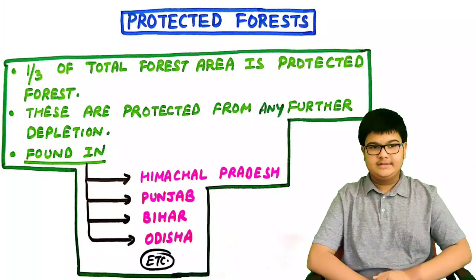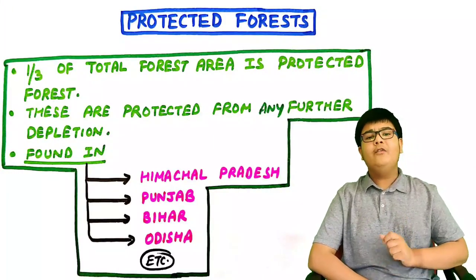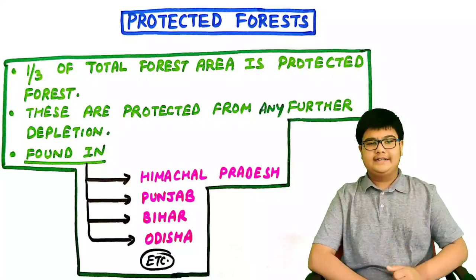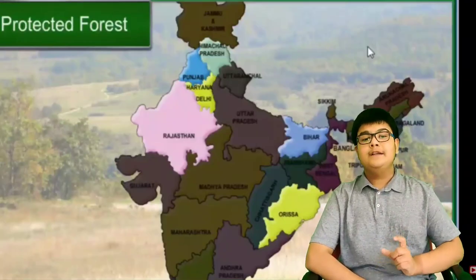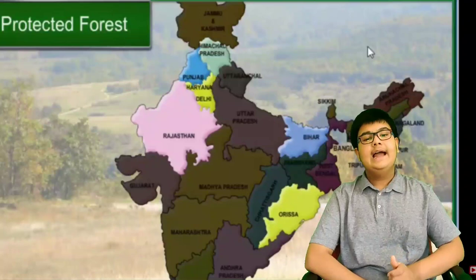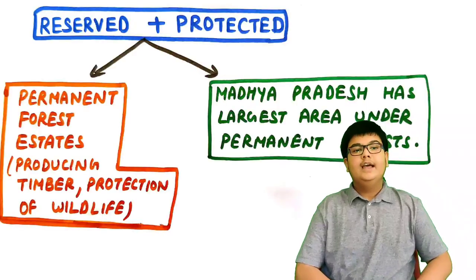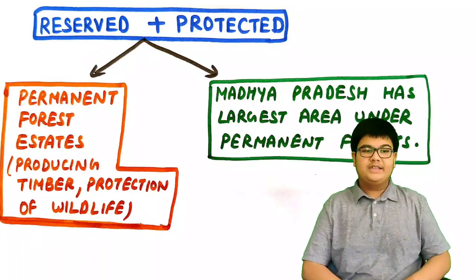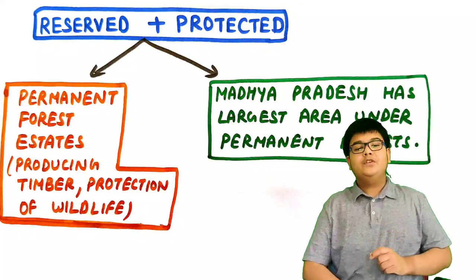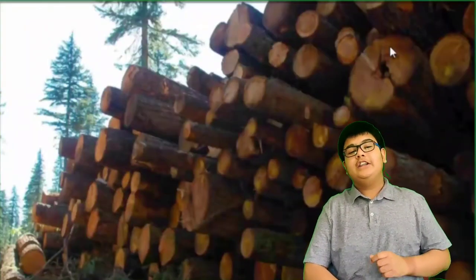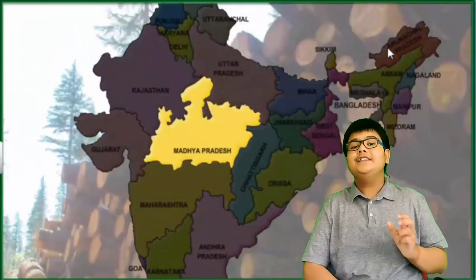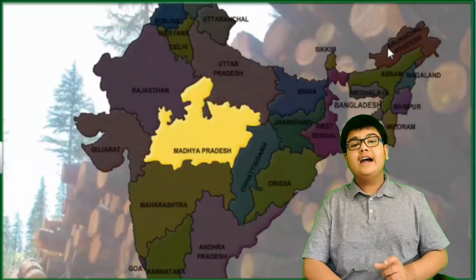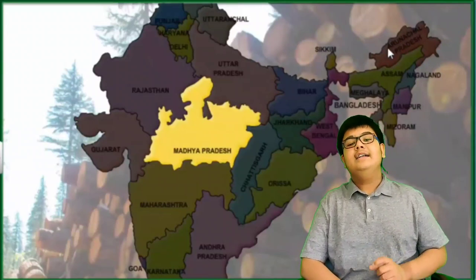Second, protected forests. One third of the total forest area in India is protected forest. These are protected from any further depletion and are found in Himachal Pradesh, Punjab, Bihar and Odisha. Both reserved and protected forests are collectively known as permanent forests, used for producing timber and protection of wildlife. Madhya Pradesh is the state with the largest forest area under permanent forests.